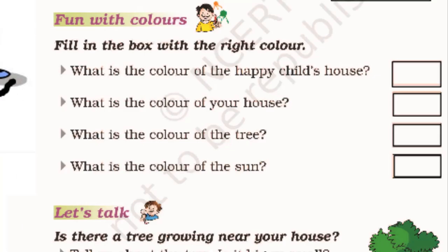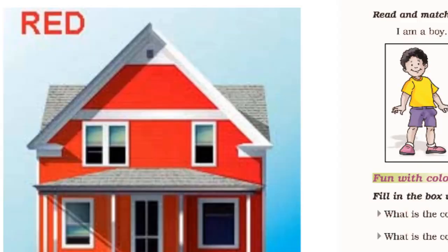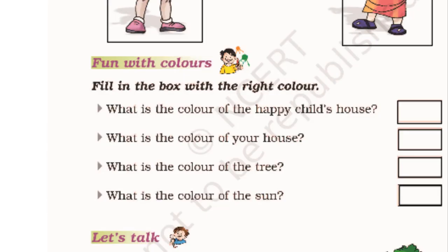The next exercise is fill in the box with the right colors. Let's start with the first one. What is the color of the happy child's house? A happy child's house is red in color. So now I will color the box with the color red.